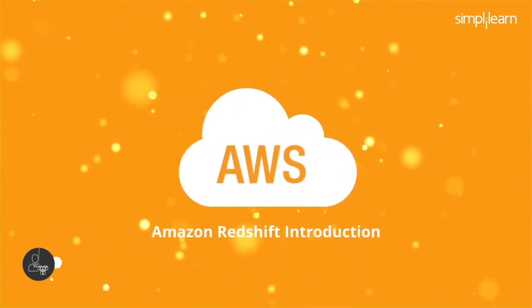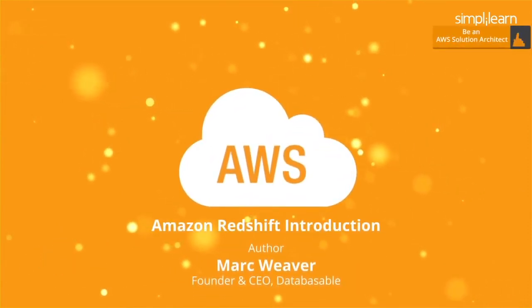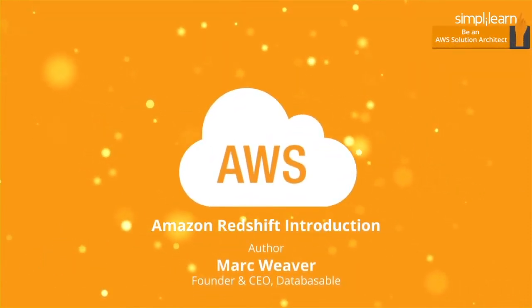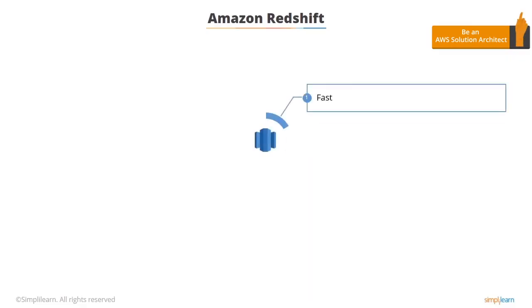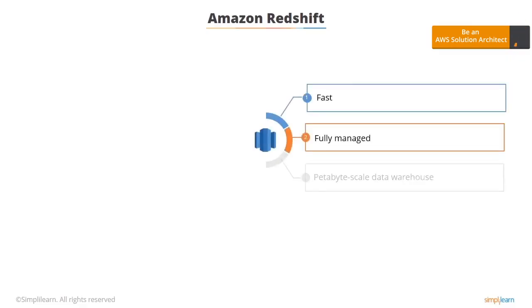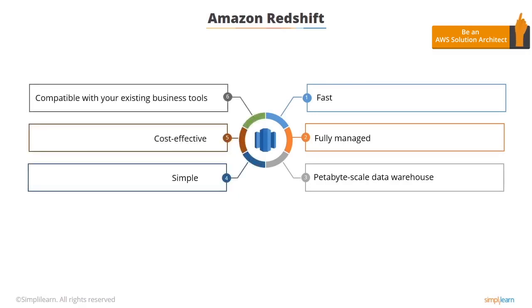This is the Amazon Redshift section where we'll take an overview of Amazon Redshift. Amazon Redshift is a fast, fully managed, petabyte-scale data warehouse that makes it simple and cost-effective to analyze all your data using your existing business intelligence tools.